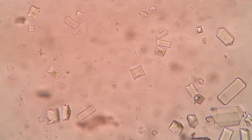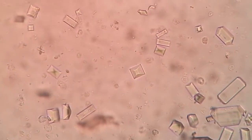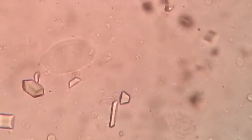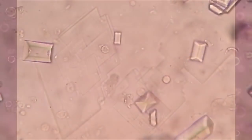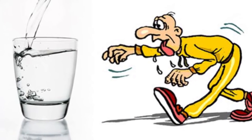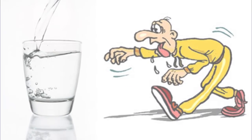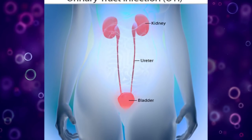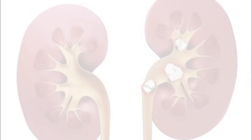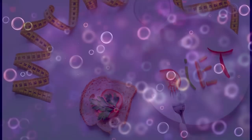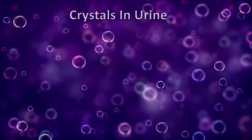The condition of presence of crystals in the urine is known as crystalluria. These crystals can form because of several reasons such as dehydration, urine pH changes, urinary tract infections, urolithiasis, diet, etc.